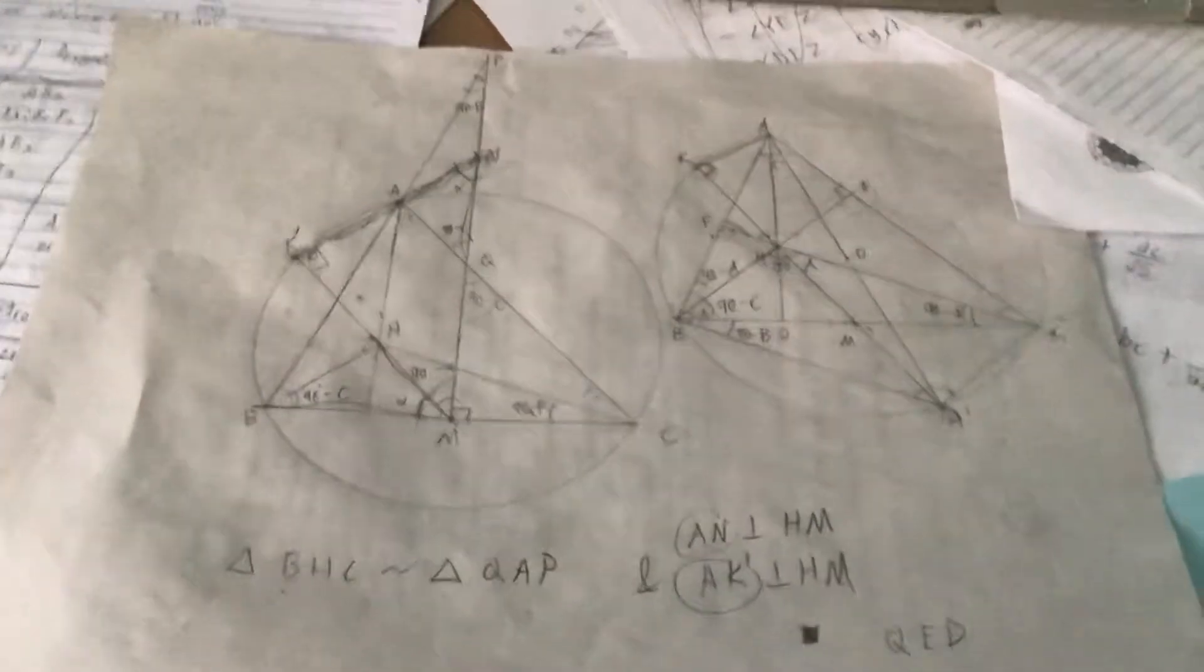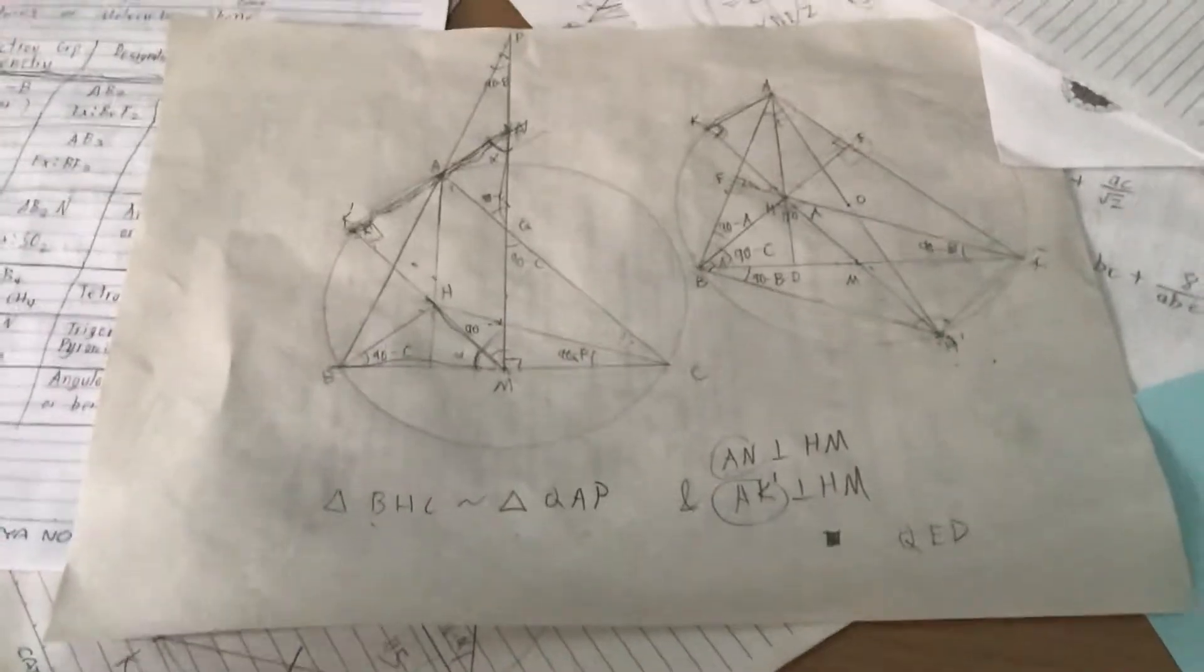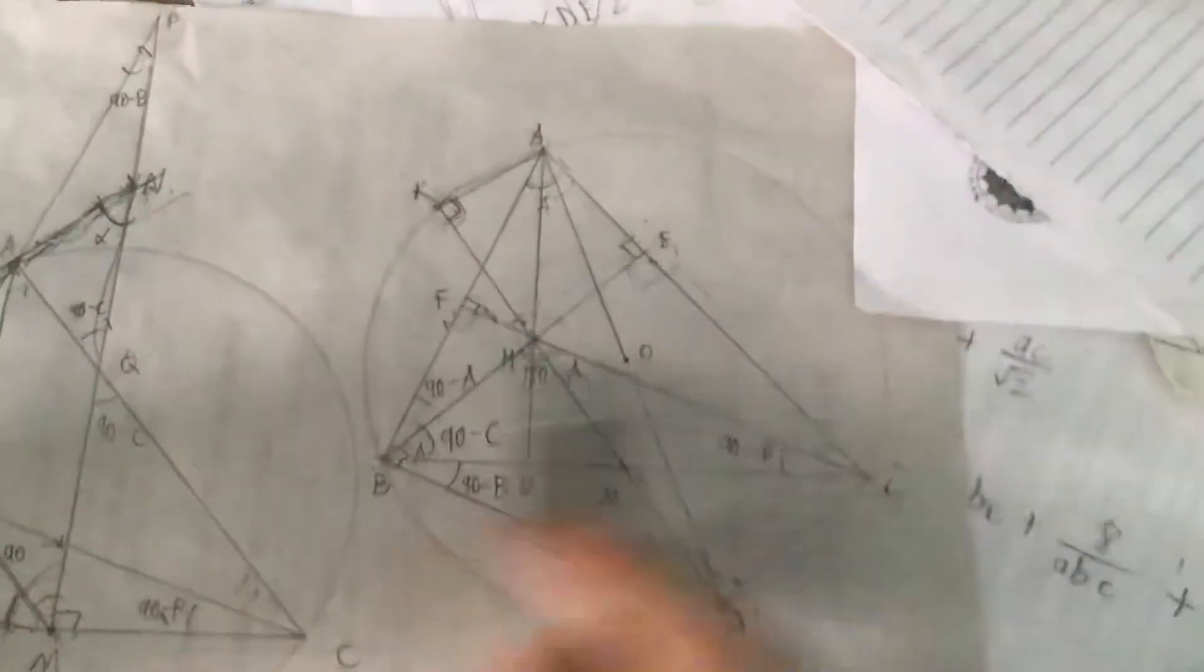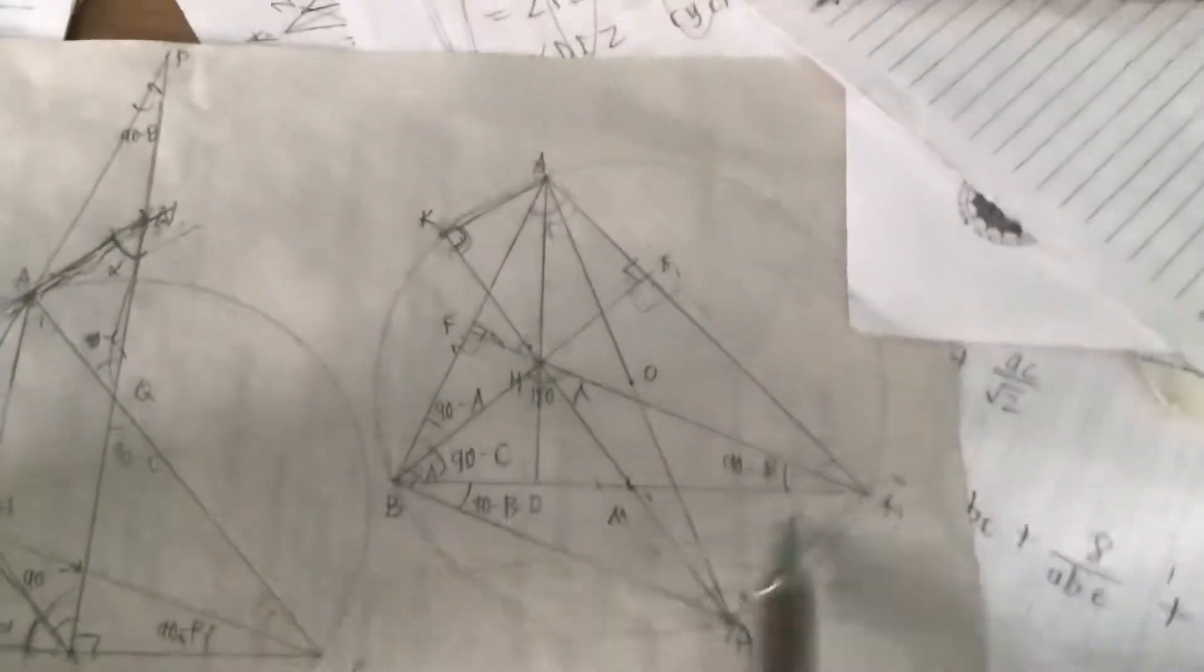And that's how you solve JBMO 2019, Junior Balkan Mathematical Olympiad problem number three. So yeah, MH point's interesting. Miquel point, concurrent. I don't know, I think I first discovered it when I was solving some ABMO problem.